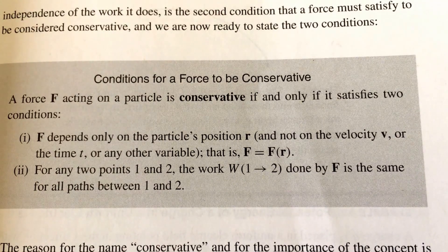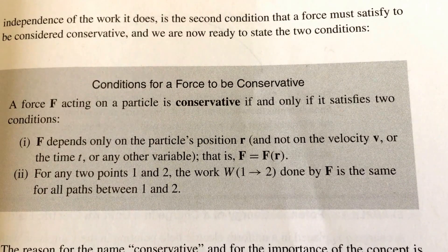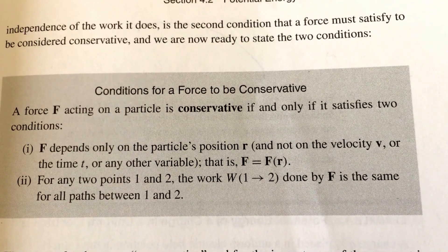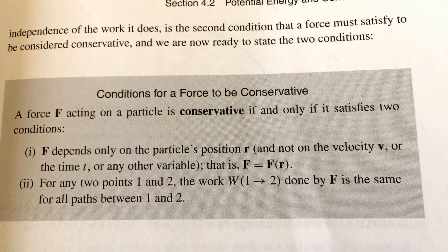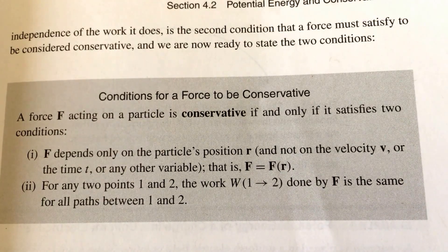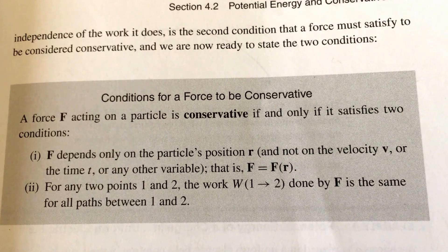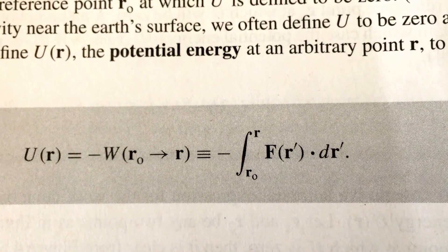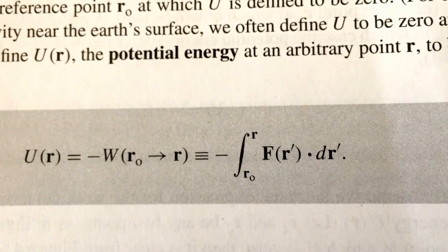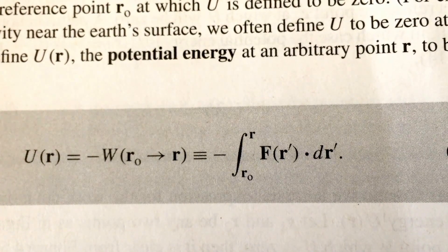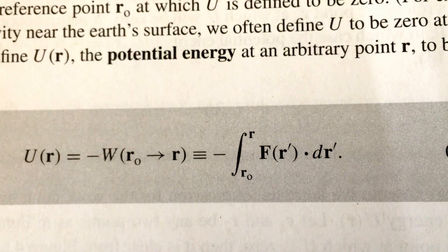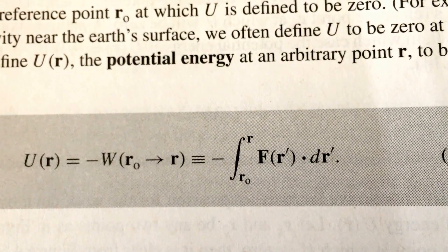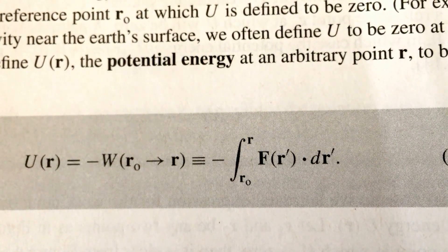The book defines two conditions for a force to be considered conservative. The first condition is that the force only depends on the particle's position — not on velocity, time, or any other variable. Condition two requires that the work done by the force in going from point 1 to point 2 is the same no matter the trajectory. The upshot is that we can define a potential energy U, which is just a function of position, defined as the negative of the work done by a force in going from some initial position R-naught to the position R — equal to the negative line integral from R-naught to R.